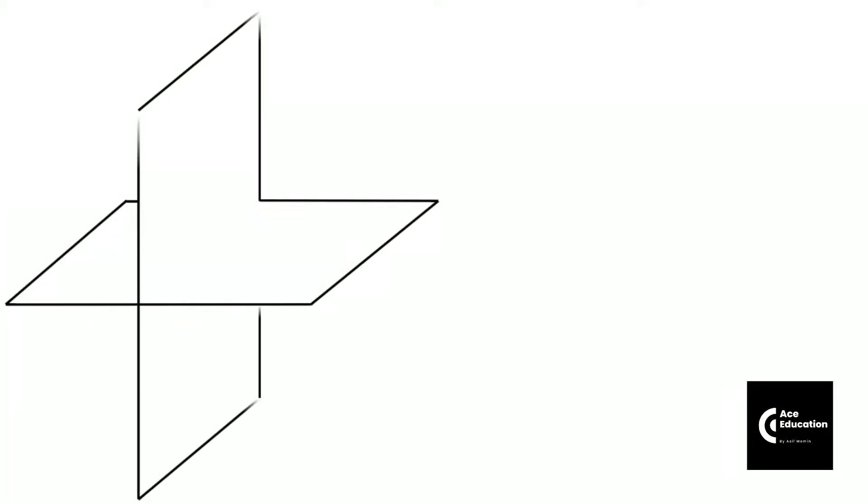We will assume one vertical plane and one horizontal plane with respect to which we need to project that line. Now if a line is inclined to both the planes, taking an example of line AB which is inclined to both planes, we need to project this line on the vertical plane and on the horizontal plane. If the line is not parallel to the vertical plane, we are not going to get true length in the vertical plane, and if it is not parallel to the horizontal plane, we are not going to get true length in the horizontal plane either.